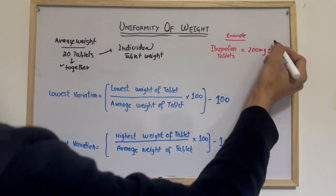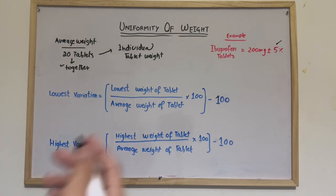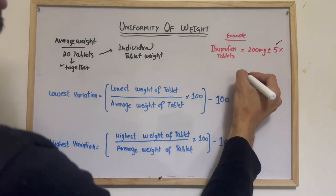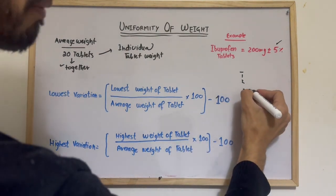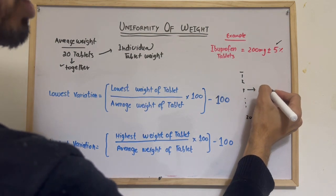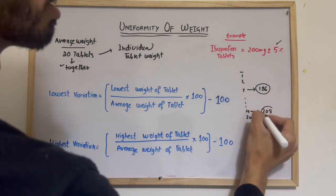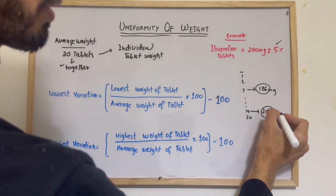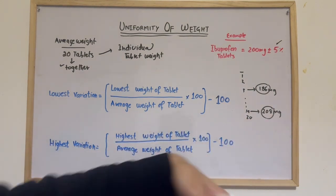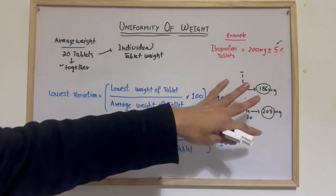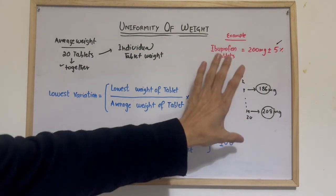So how do we calculate this five percent and check whether our tablet is passing the uniformity of weight or not? Suppose we have taken 20 tablets. For one tablet the weight is 186 mg, and for another it is 208 mg. The 186 mg is our lowest weight and 208 mg is our highest weight. We need to check whether these fall within the five percent limit.